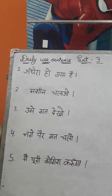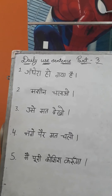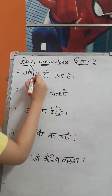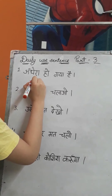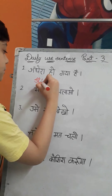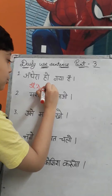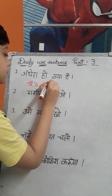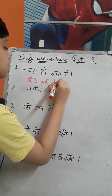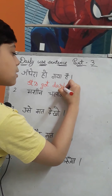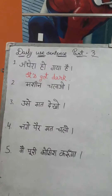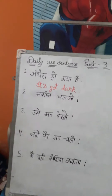So my first sentence is: Andhira ho gaya hai. We will write it in English like: It's got dark. One more time — It's got dark.